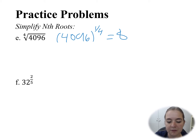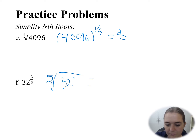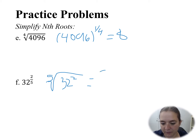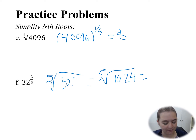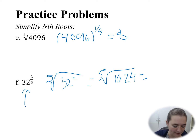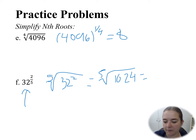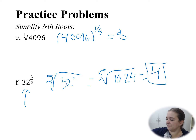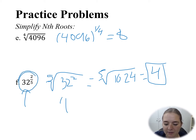For the next one, let's simplify by writing it out. 32 to the power of 2 fifths tells me I want the fifth root of 32 squared. If I continue to simplify, 32 squared gives me 1024, so I want the fifth root of 1024. I can find this with the fifth-root button on the calculator or by typing 1024 to the power of 1 fifth, and I find out the answer is 4. It's important to be able to use your tools and also to understand the process.